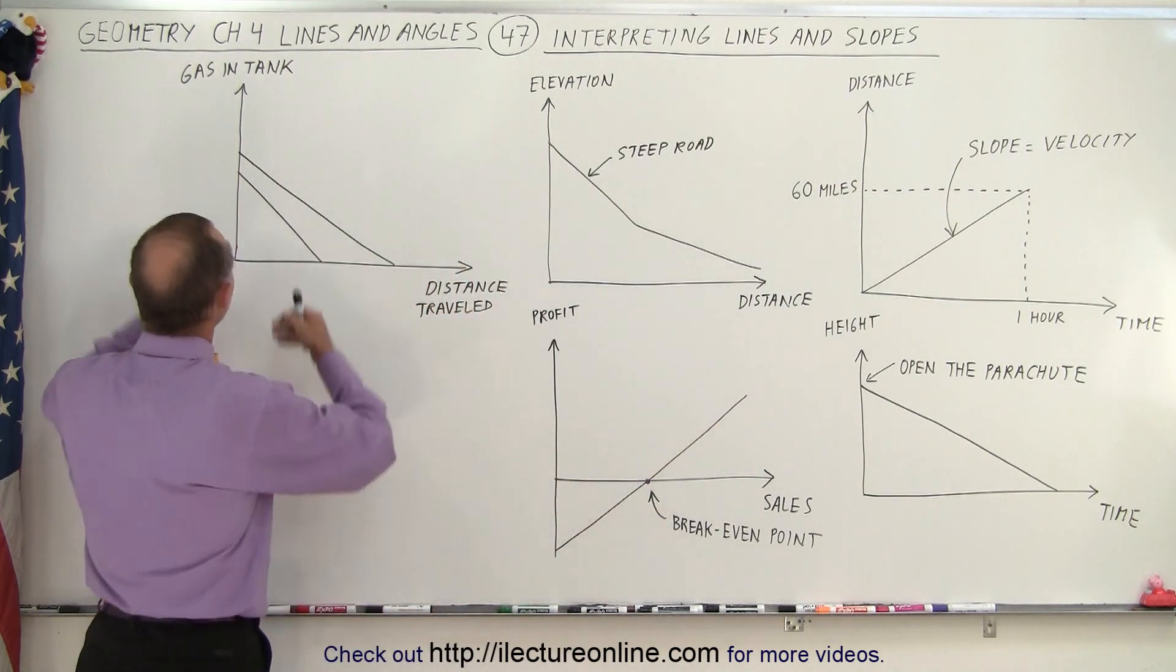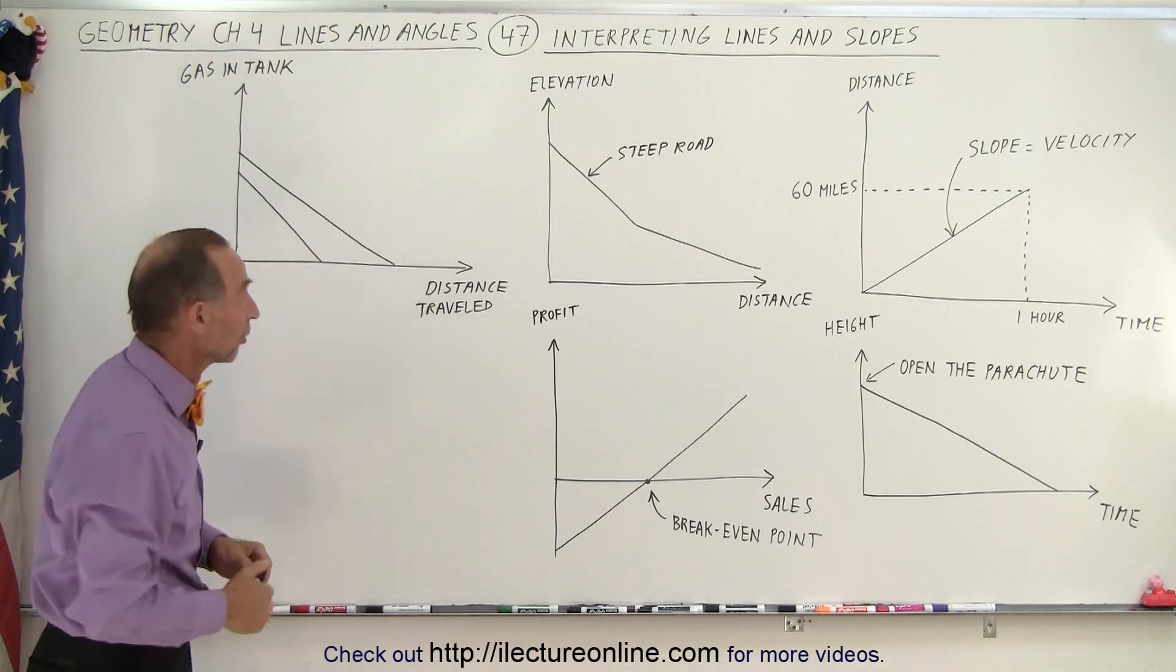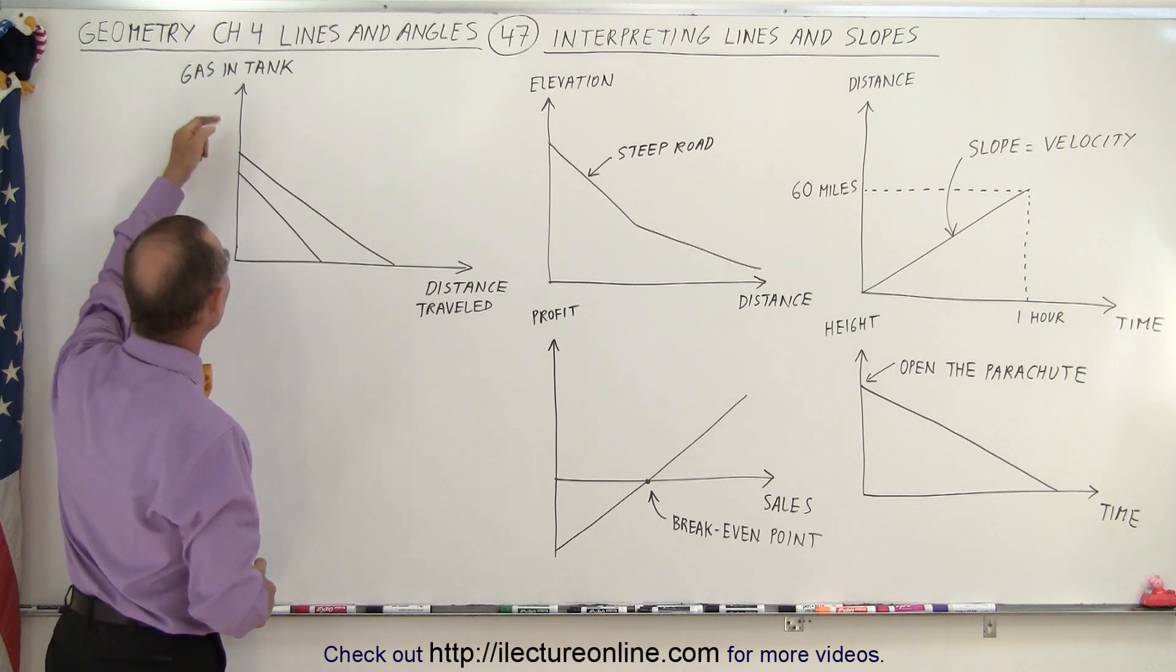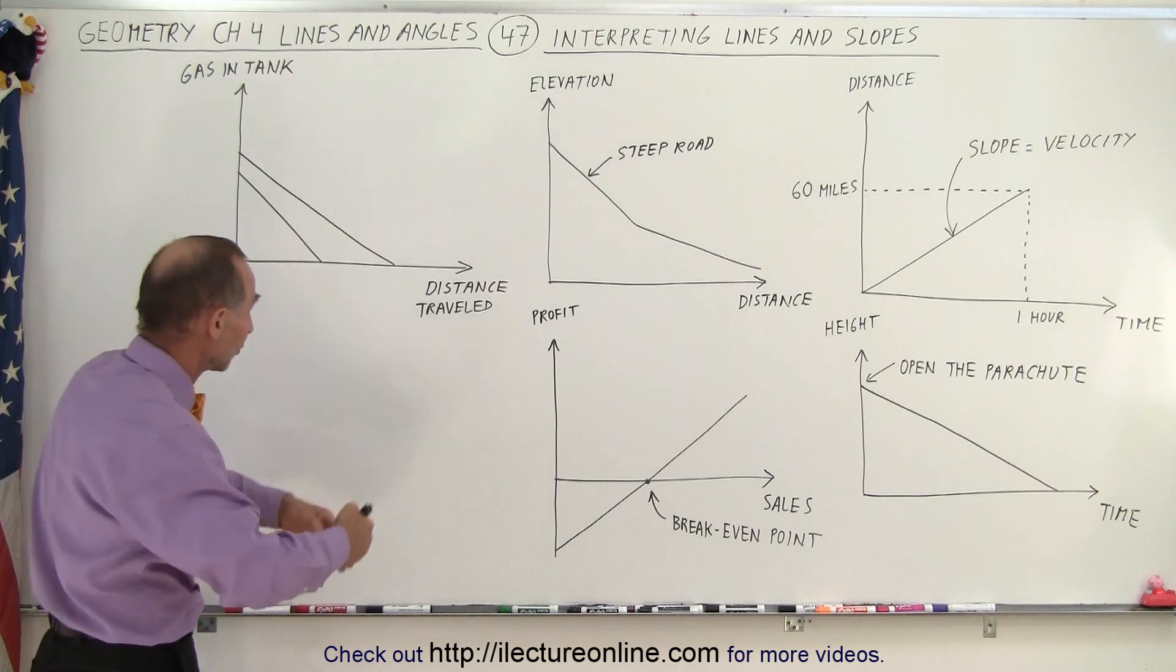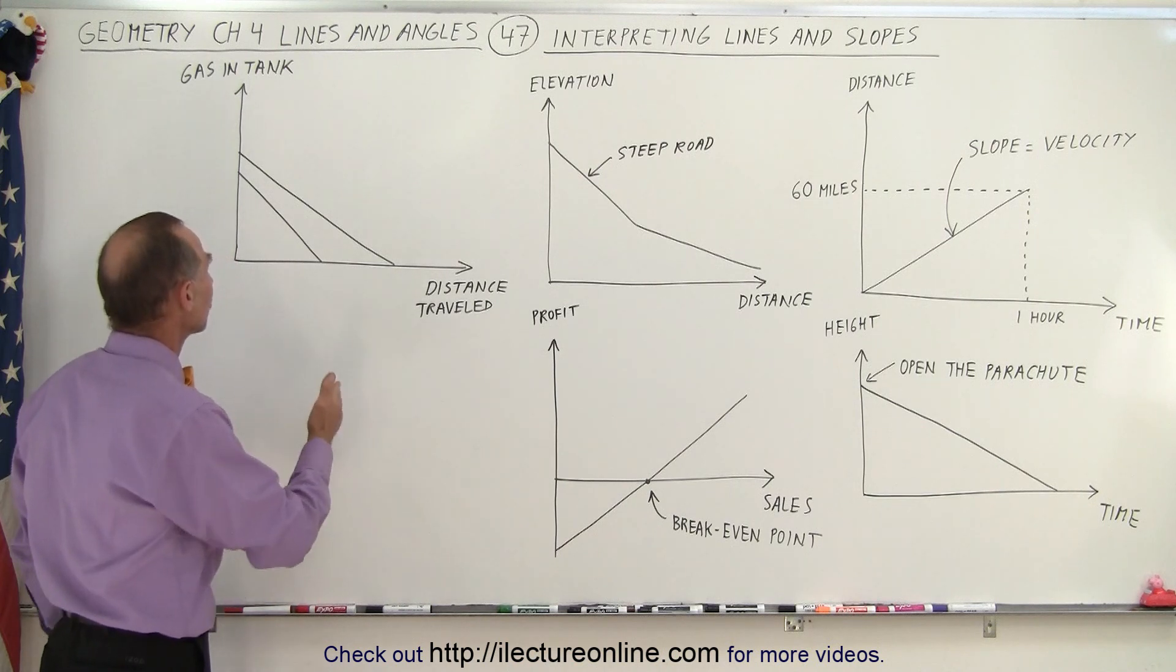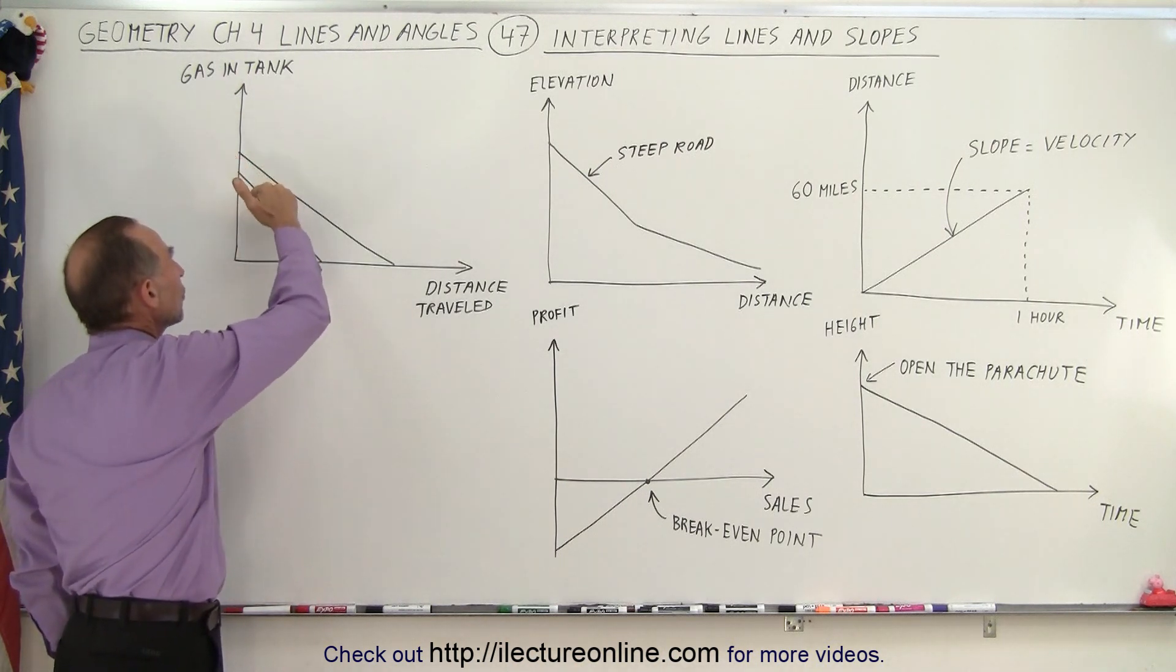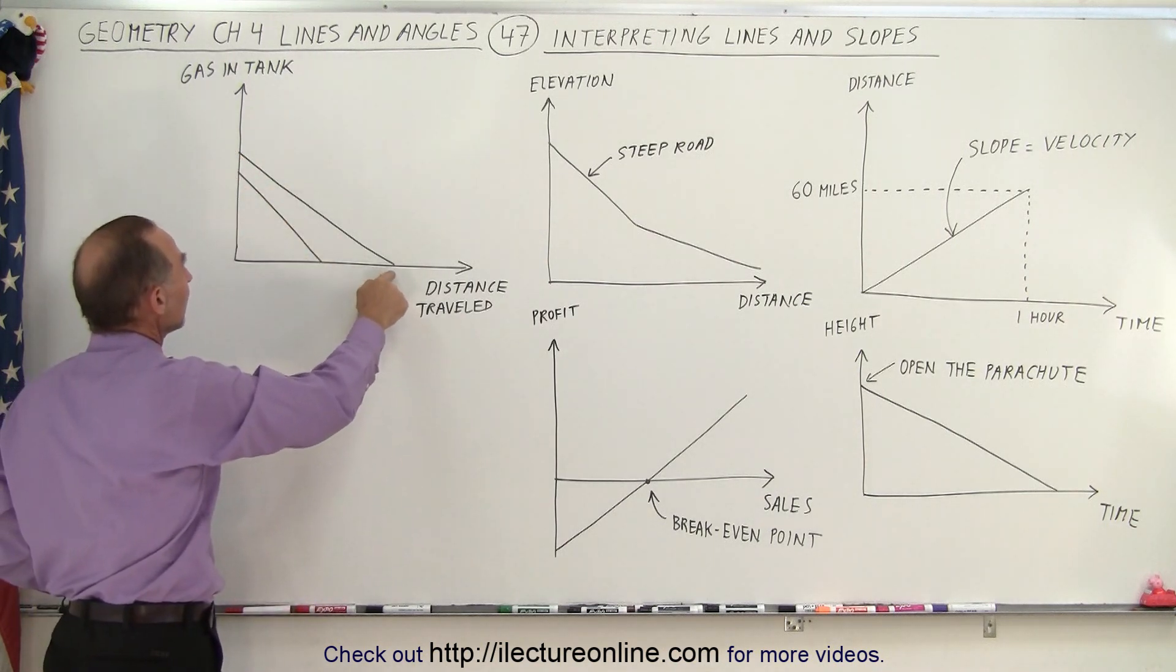And here we have gas in the tank and distance traveled and this is for two different cars. Notice that they both have a different amount of gas in the tank when you first start out. So when you tank up some cars can hold more gas, some cars can hold less gas. So here we have two cars, one that holds more gas, one that holds less gas. Then you start driving and you can see that as you cover distance you lose gasoline because you burn it up and eventually if you keep going your tank will be empty.